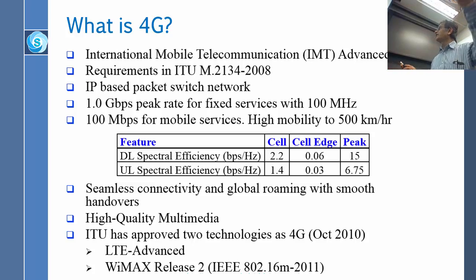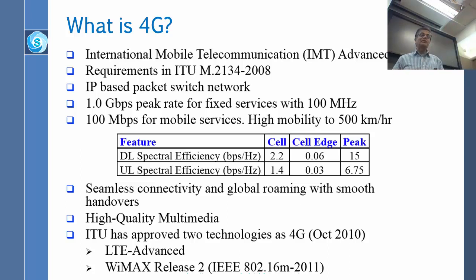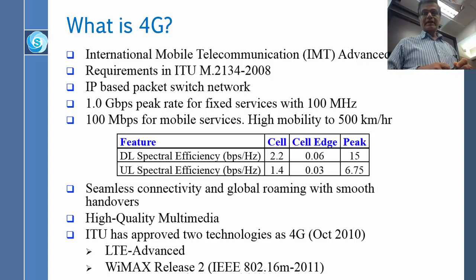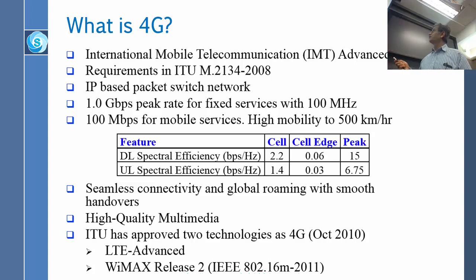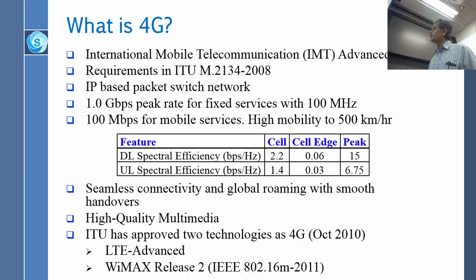Obviously the edge is very far and the center is very close. Peak efficiency could be 15 bits per hertz when you are just next to the tower. On the uplink, the values are 1.40, 0.36, 0.75 and so on. The standard also requires seamless connectivity, global roaming with smooth handovers, and high quality multimedia.